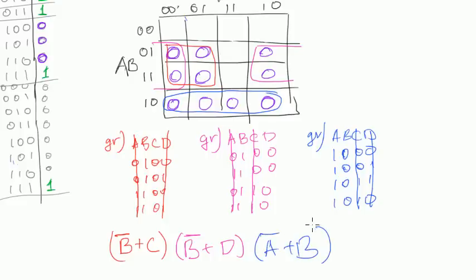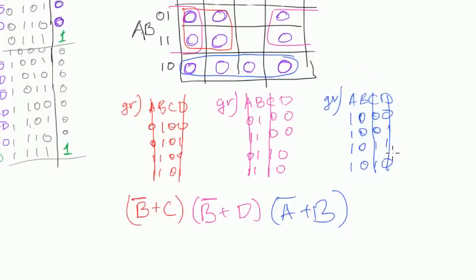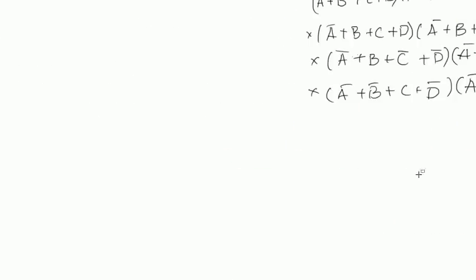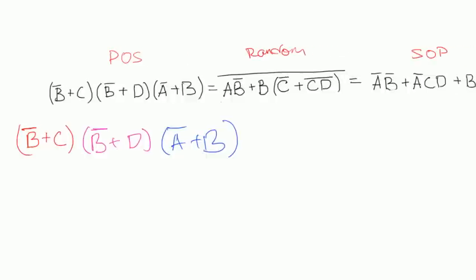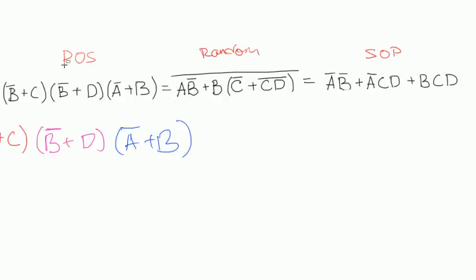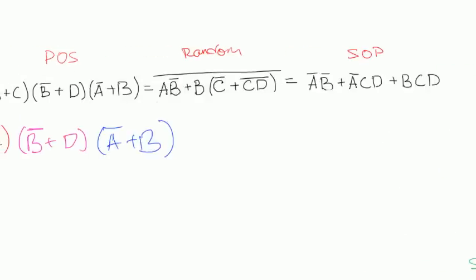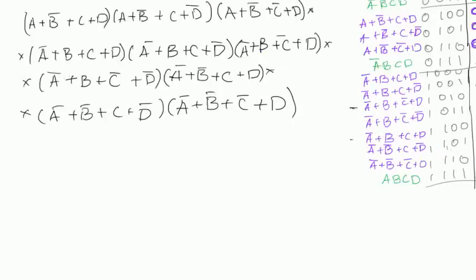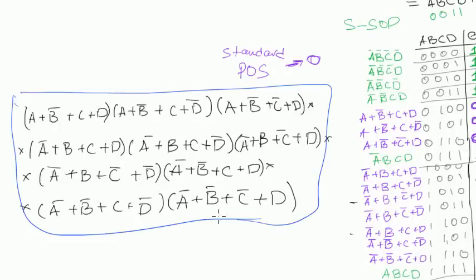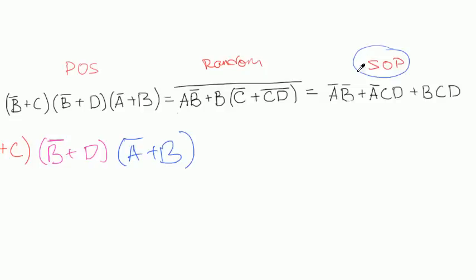So that's how we perform a Karnaugh Map on product of sums. Let's compare — that's exactly the same expression as before. We did sum of products, standard canonical sum of products, then simplified product of sums, and canonical product of sums. Now you can work both with sum of products expressions and with product of sums expressions.